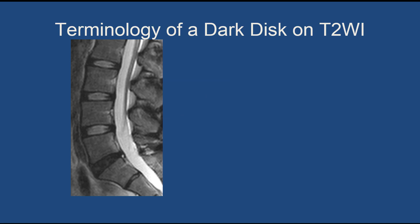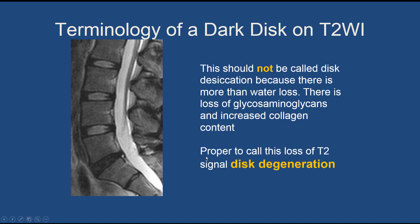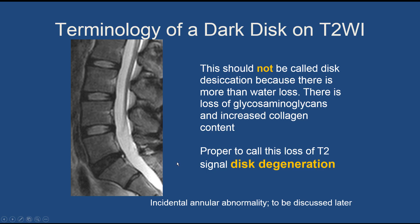Let's talk about the terminology of a dark disc on the T2-weighted image. At L5-S1 you can see a dark disc. It is incorrect to call this disc desiccation, because there's more going on than simple loss of water, which is what desiccation means. There's also loss of proteins and collagen content of the disc. So it's proper to call this loss of T2 signal disc degeneration, not disc desiccation. There's also an annular abnormality visible here, which we'll discuss shortly.